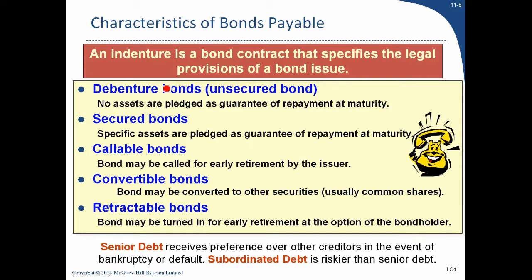Even amongst debt there's a further ranking. There's senior debt, which gets paid first, followed by subordinated debt. Senior debt receives preference over other creditors in the event of bankruptcy or default. Subordinated debt is therefore riskier than senior debt — if there's a bankruptcy you might not get paid because you hold subordinated debt, so you demand a higher rate of interest.